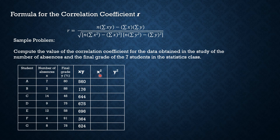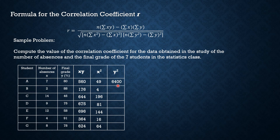For the x squared column, we compute the square of each x value: 7 squared is 49, 2 squared is 4, 14 squared is 196, 9 squared is 81. Complete the x squared column. For the y squared column: 80 squared is 6,400; 88 squared is 7,744; 46 squared is 2,116. After completing the table, we now have all required values.